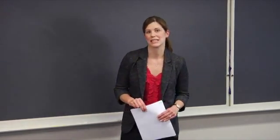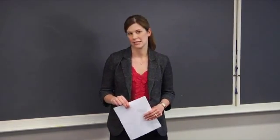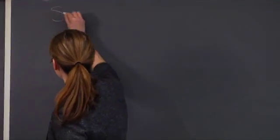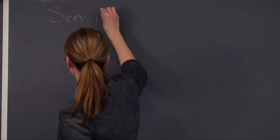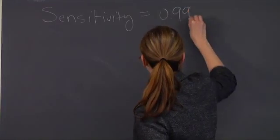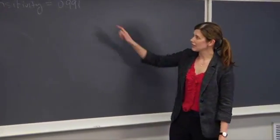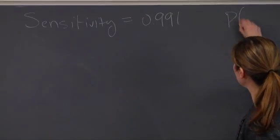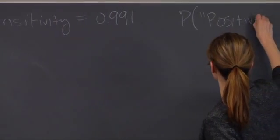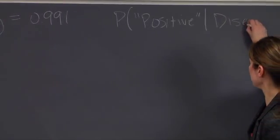In today's example I'm going to be discussing an HIV test known as the OraQuick rapid test. The test parameters of the OraQuick are that it has a sensitivity of 99.1%, and sensitivity in this case refers to the probability that a patient has a positive test result given that he or she has the particular disease.